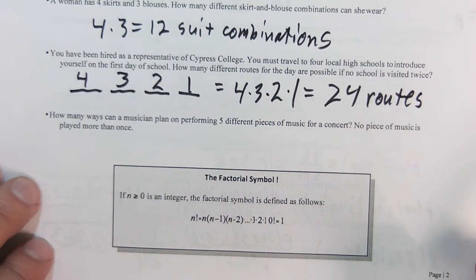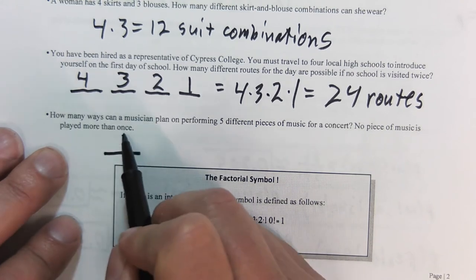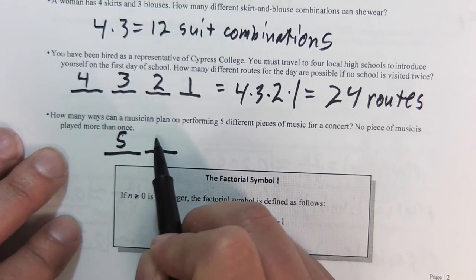Same thing with this last one. How many ways can a musician plan on performing five different pieces of music for a concert, and it's not repeated? Once again, we have first, we have five choices, then four, then three,